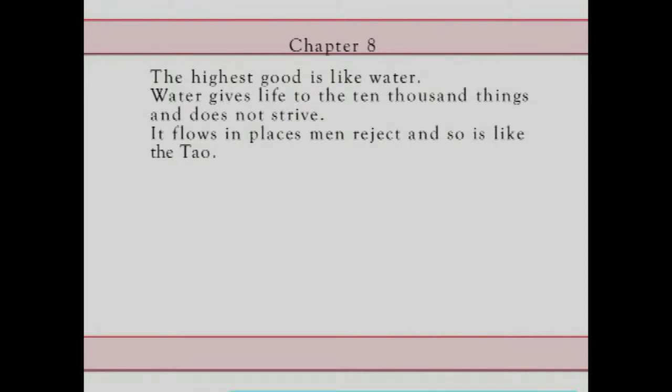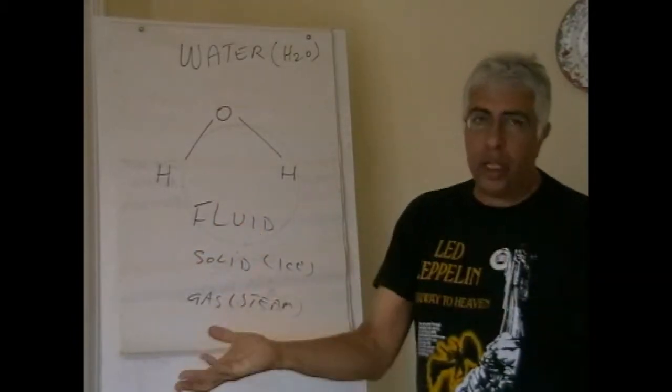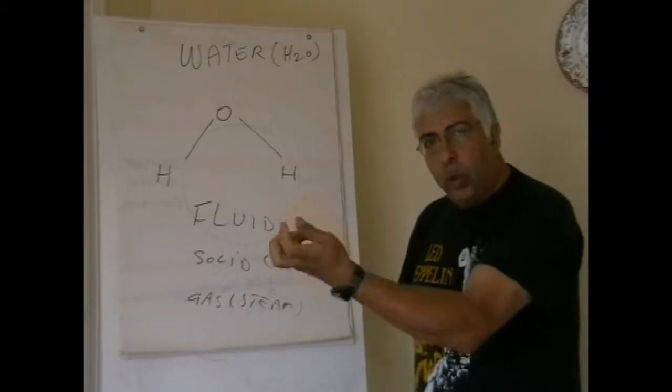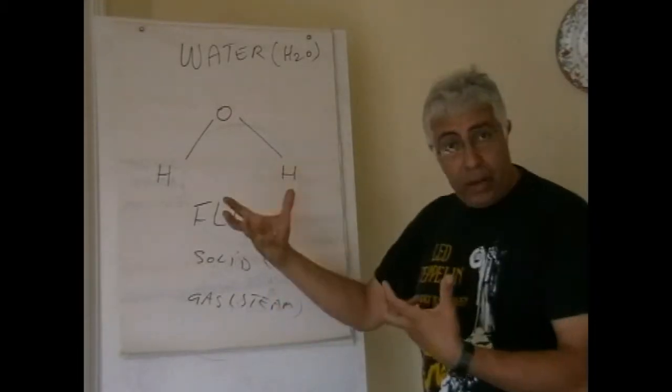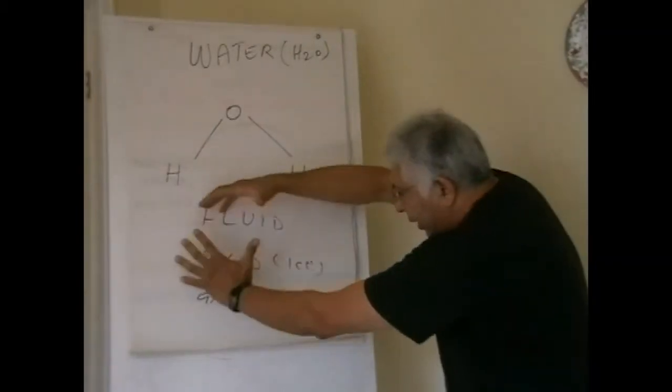The highest good is like water. Water gives life to the ten thousand things and does not strive. It flows in places men reject, and so is like the Dao. We say water is life, which we now know scientifically. In the Dao De Jing, Laozi talks about water as a form of Dao. Water is like the Dao - it exists in all these three different forms: yin, yang, and qi.